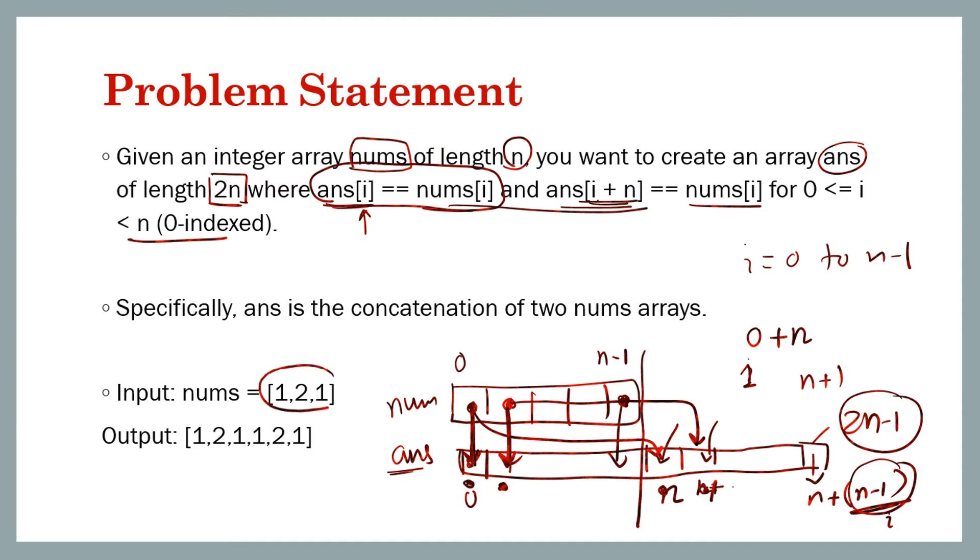This is the original array, so you have to concatenate it twice. That's why the problem is called Concatenation of Arrays. This is [1,2,1], so [1,2,1,1,2,1] is the result.